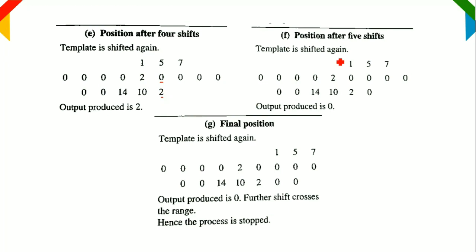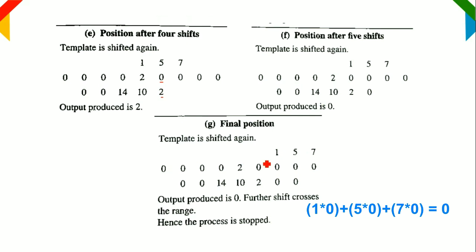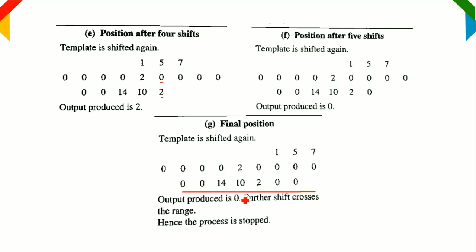Shifting the template to the next position: 1×0 + 5×0 + 7×0 = 0, assigned to the center pixel. Continuing to the final position: 1×0 + 5×0 + 7×0 = 0. From the first position to the last, the convolution output is 0, 0, 14, 10, 2, 0, 0. This is the resultant image from the convolution operation.